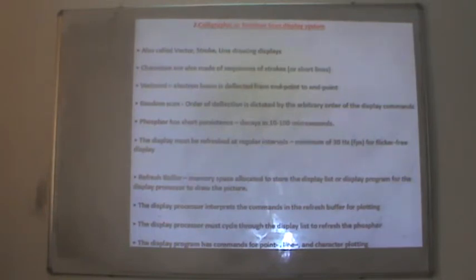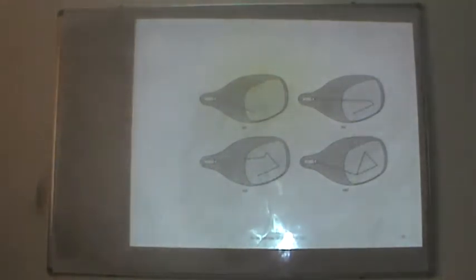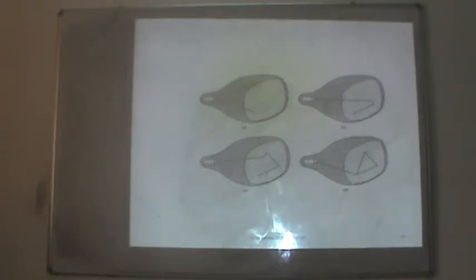The display processor interprets commands in the refresh buffer for plotting and must cycle through the display list to refresh the screen. The display program has commands for point, line, character plotting, etc. Images can be drawn at random from any position to any position. A triangle is formed by joining three points in a random scan display.